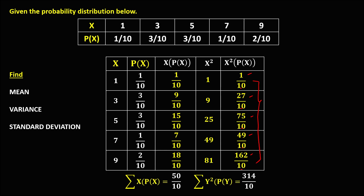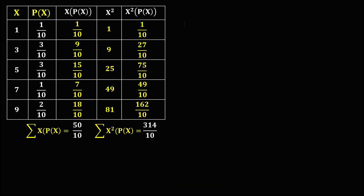Using the table, to solve for the mean, the formula is the summation of x times p(x). This summation equals 50 over 10. Reducing, 50 divided by 10 equals 5. So the mean is equal to 5.